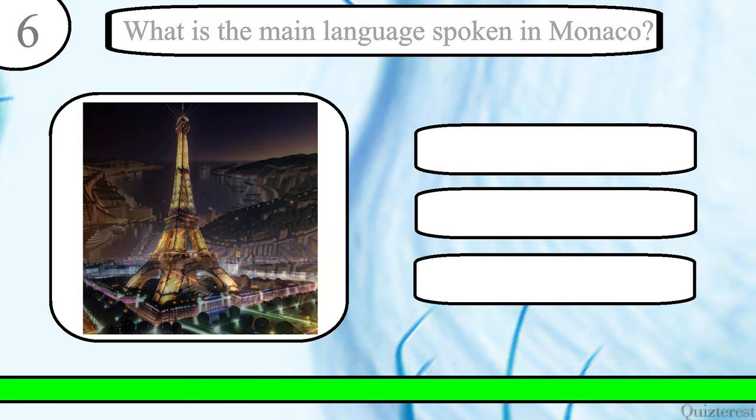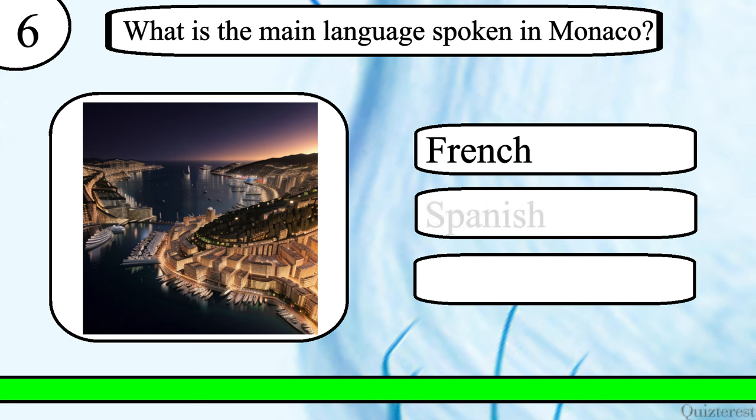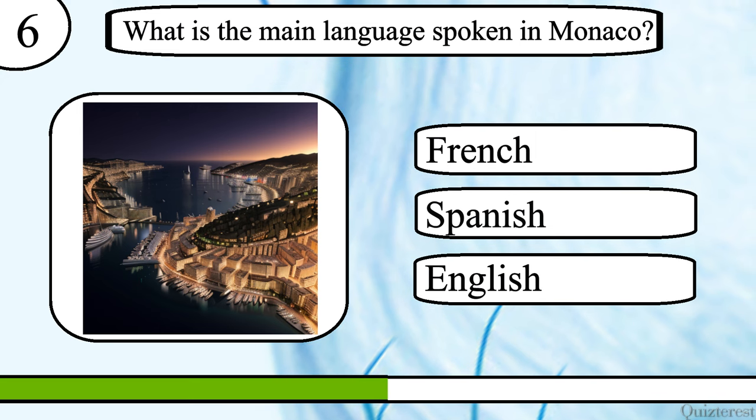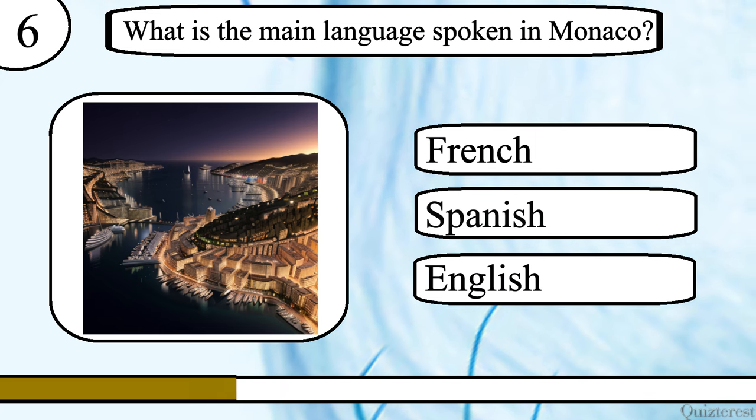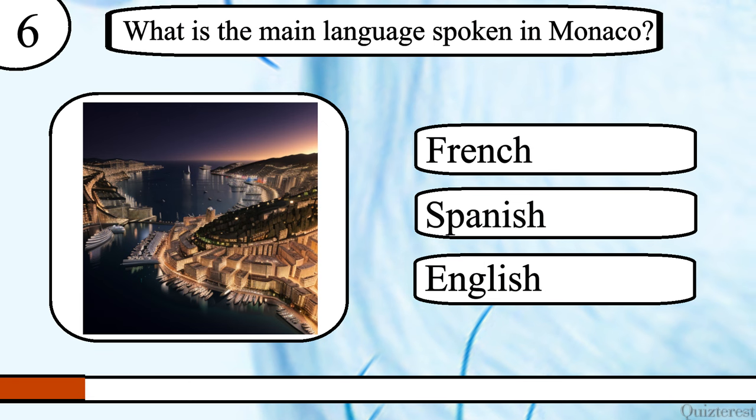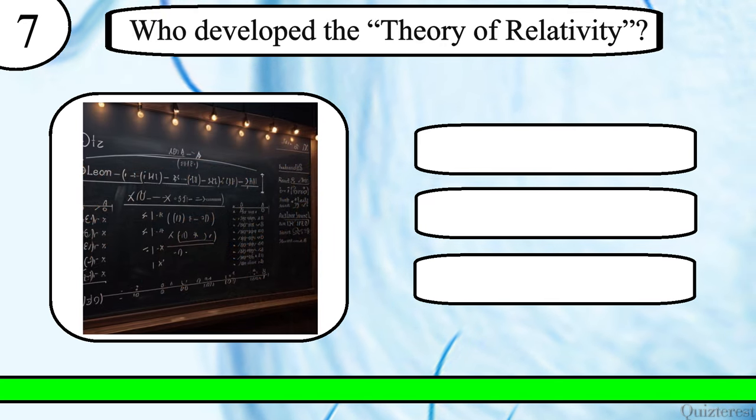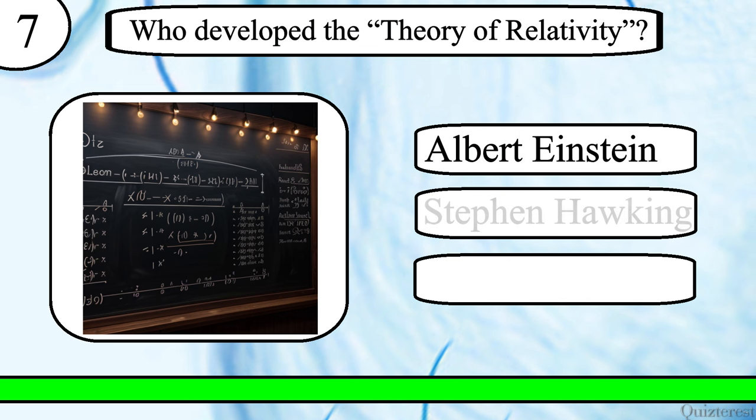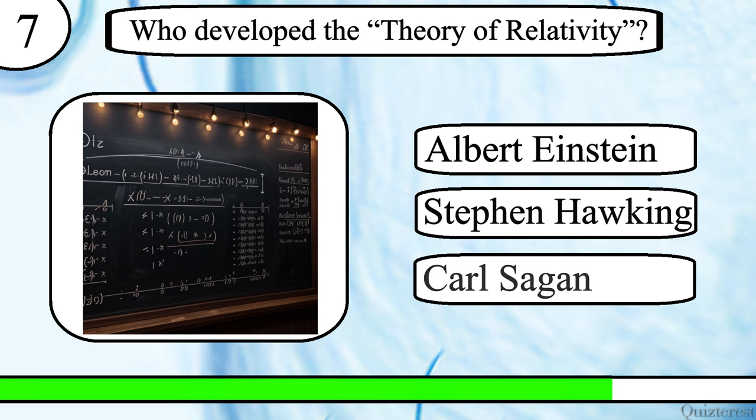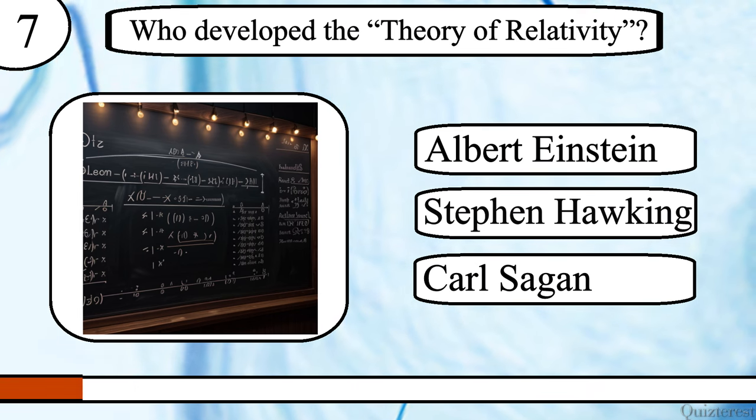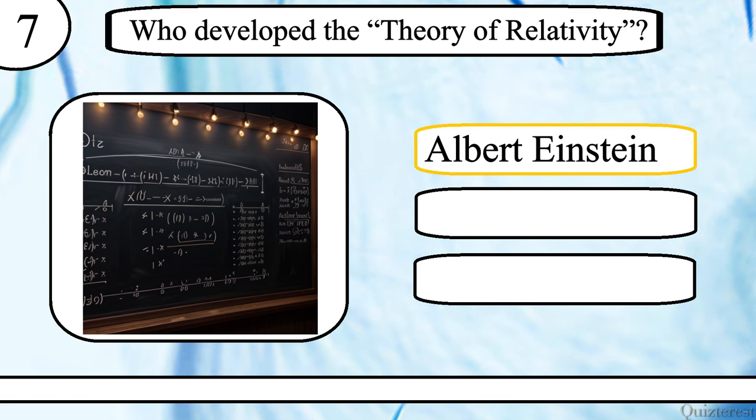Question 6. Who developed the theory of relativity? Albert Einstein, Stephen Hawking or Carl Sagan? The correct answer is Albert Einstein.